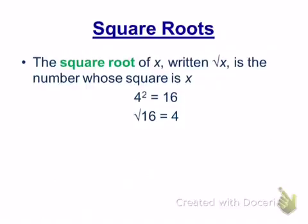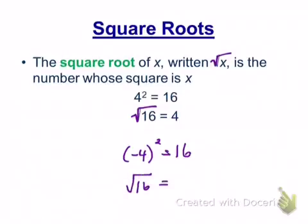The square root of x, written as square root of x, is the number whose square is x. And then it gives you just a nice little example. Because 4 squared equals 16, the square root of 16 is equal to 4.